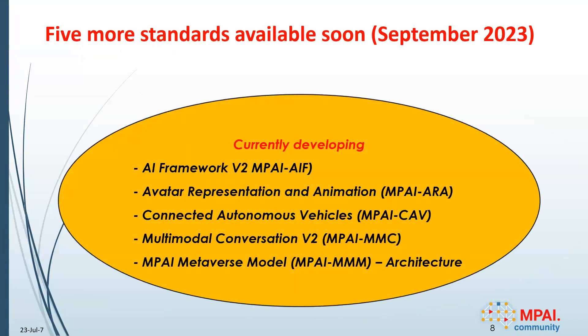We have ambitious plans, but I think we will be able to keep the promise. For the end of September, we should be able to approve five standards: an extension of the AI framework, avatar representation and animation, connected autonomous vehicles, multimodal conversation — which is about humans conversing with machines where both express emotion — and the MPAI Metaverse model architecture.